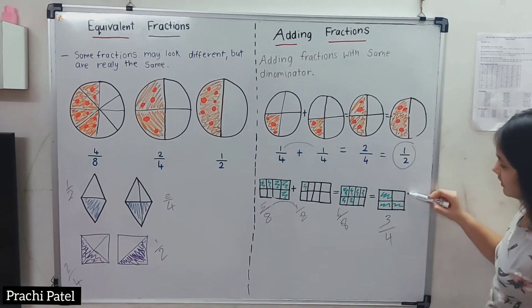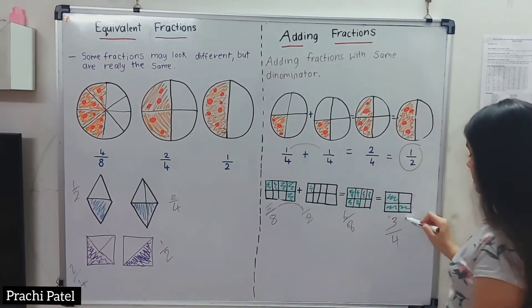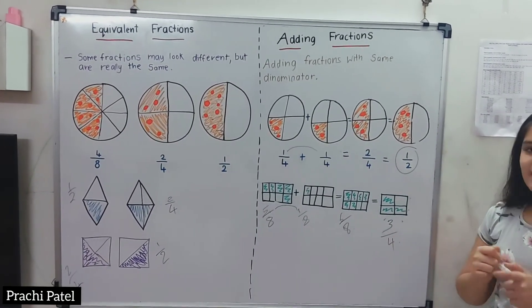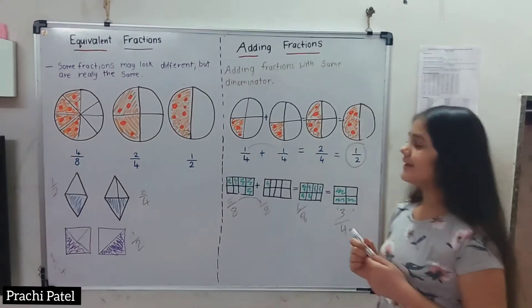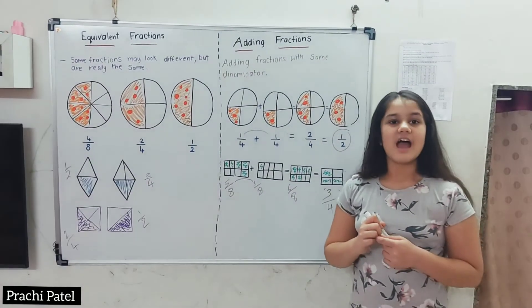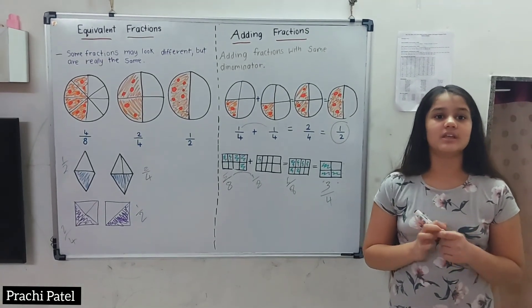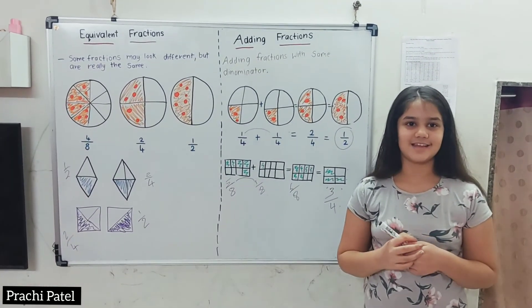You can see here 4 pieces with 3 colored, so 3/4. I hope you understand equivalent fractions and adding fractions. In the next session, we will learn how to add fractions with different denominators. Thank you.